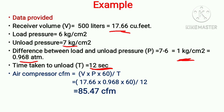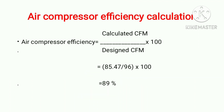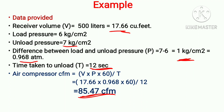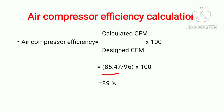Putting all values into the formula, the actual calculated CFM of the air compressor is 85.47 CFM. Now for volumetric efficiency: the formula is calculated CFM divided by designed CFM, multiplied by 100. Our calculated CFM is 85.47 and the designed CFM from the nameplate is 96. After calculation, we get 89%.